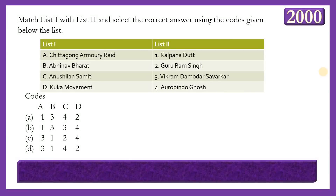Next matching question: Match events with personalities. List 1: Chittagong Armory Raid, Abhinav Bharat, Anushilan Samiti, Kuka Movement. List 2: Kalpana Datta, Guru Ram Singh, Vinayak Damodar Savarkar, Aurobindo Ghosh. The answer is option A — 1, 3, 4, 2 — meaning Kalpana Datta is related to the Chittagong Armory Raid; Abhinav Bharat was founded by Vinayak Damodar Savarkar; Aurobindo Ghosh was related to Anushilan Samiti; and the Kuka Movement was led by Guru Ram Singh in Punjab.